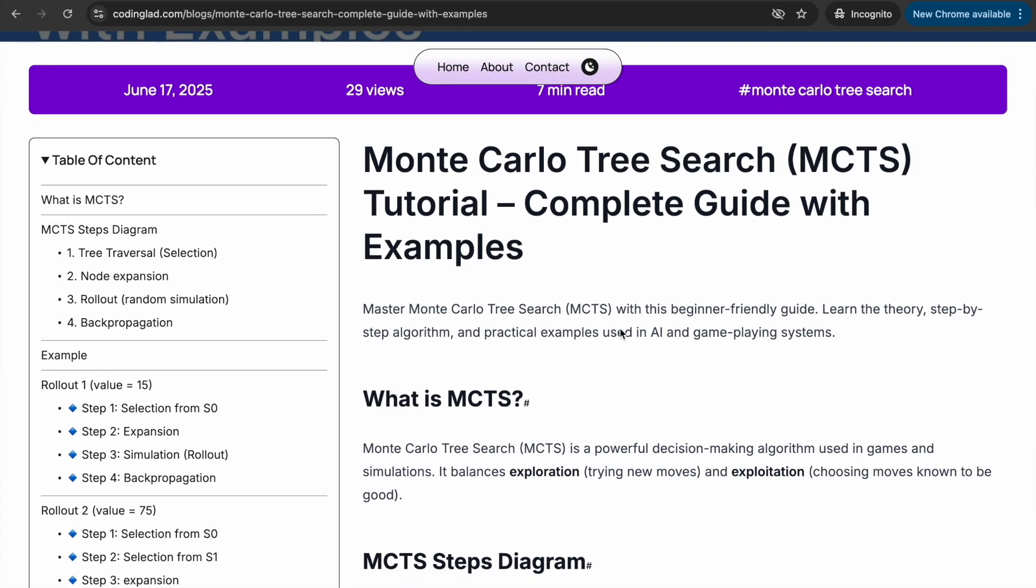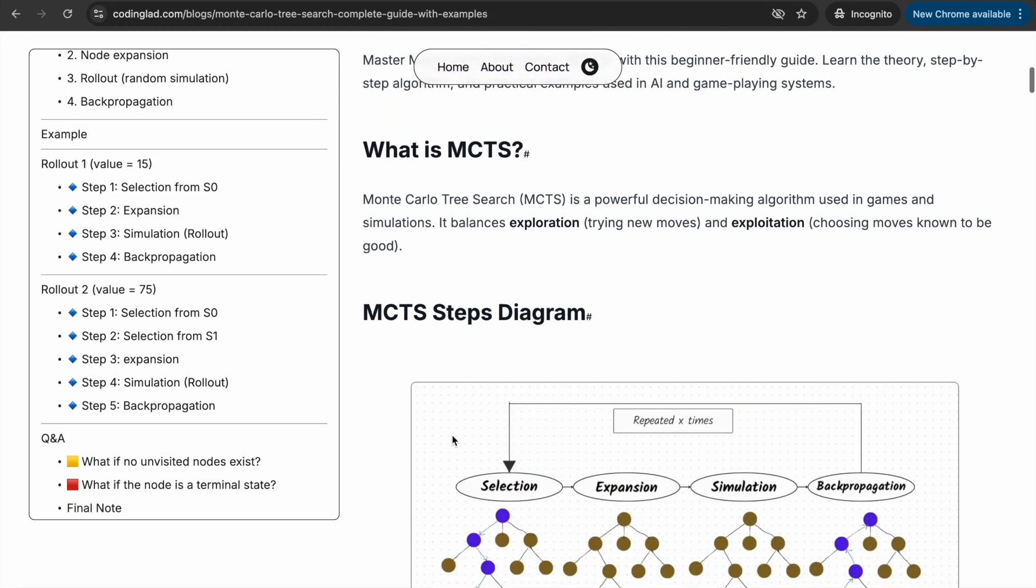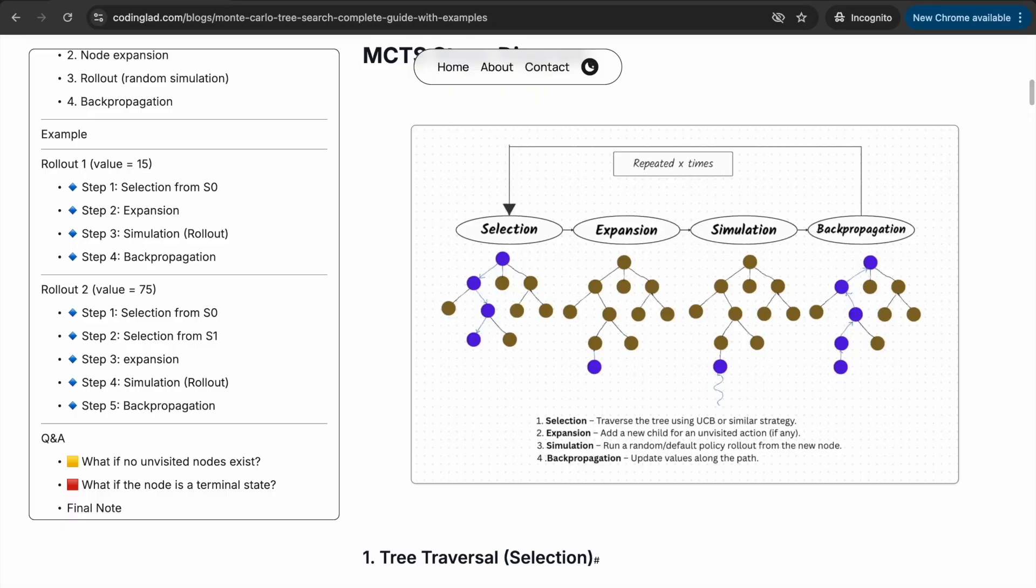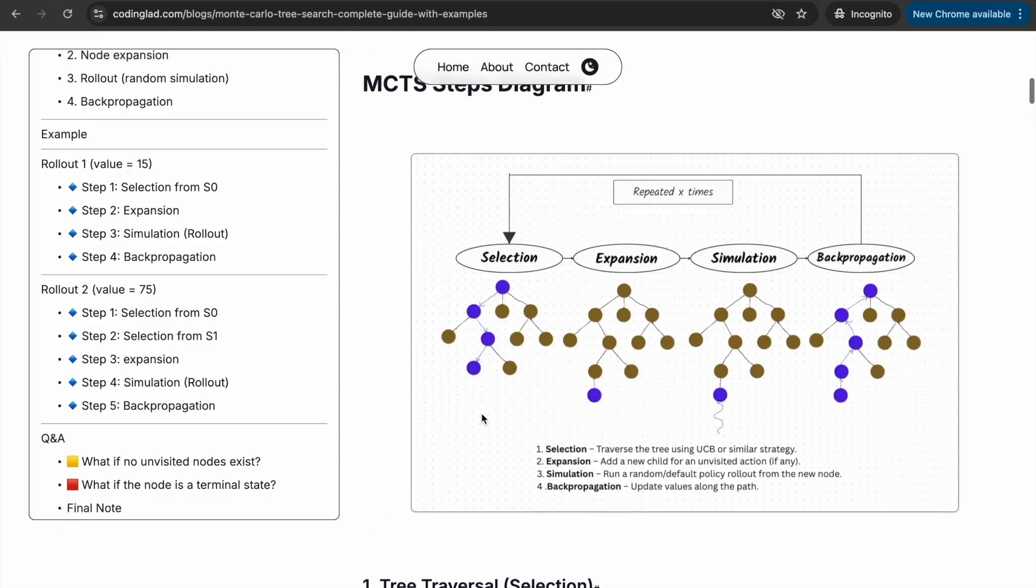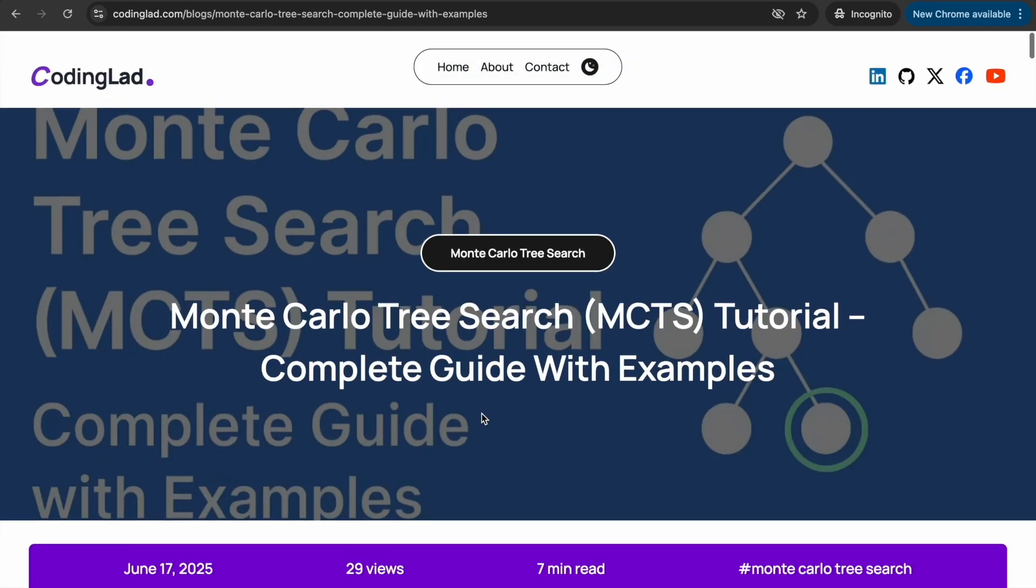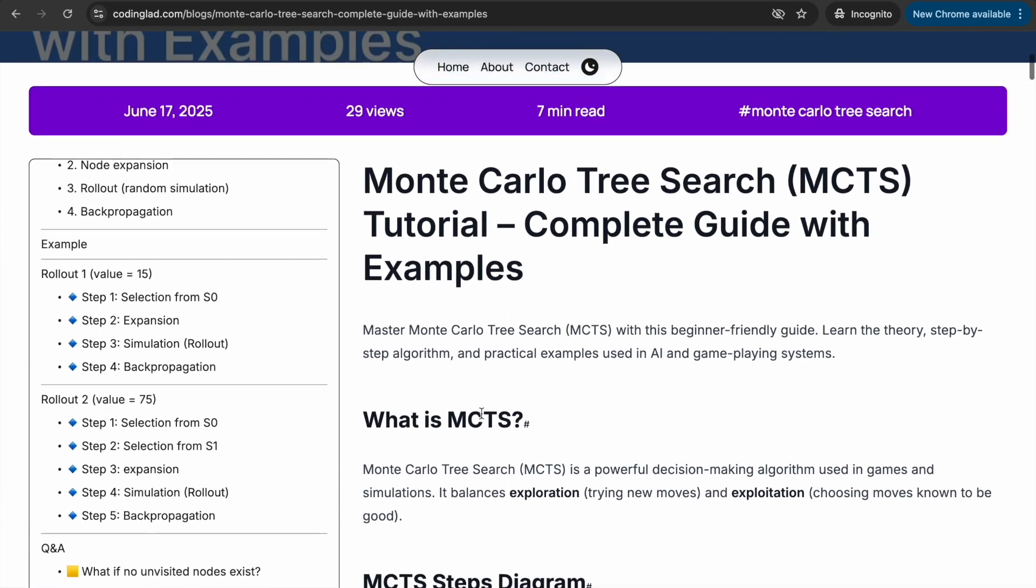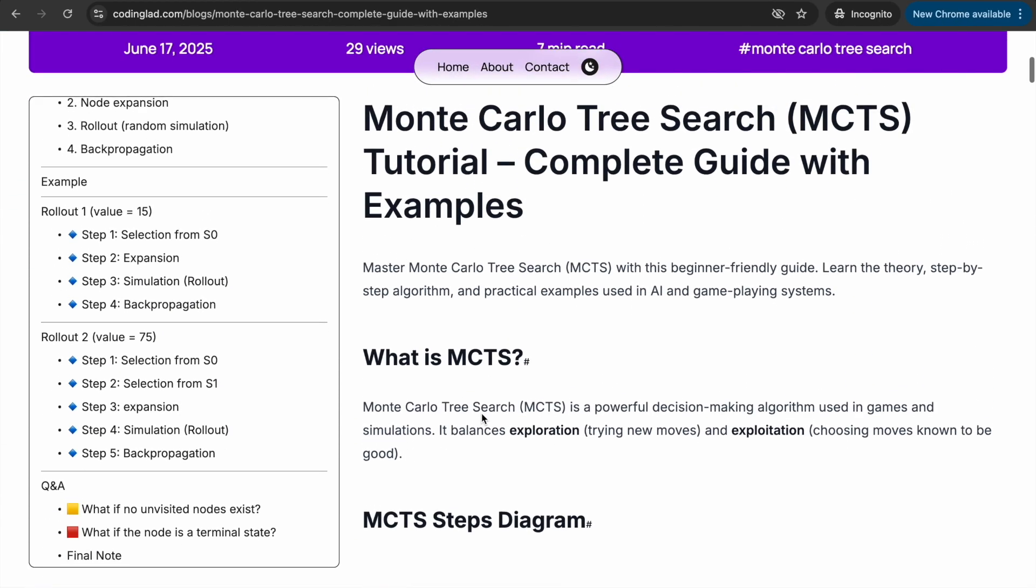MCTS is a decision-making algorithm used in games like Go, chess, and even simulations. It cleverly balances two competing goals: exploration and exploitation. Exploration means trying out new moves, and exploitation means sticking to what seems to work best.